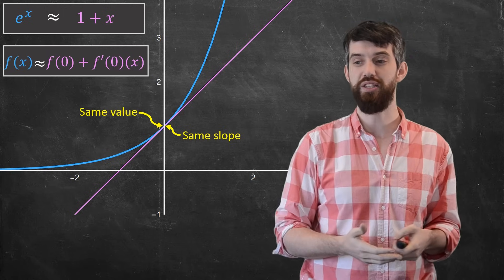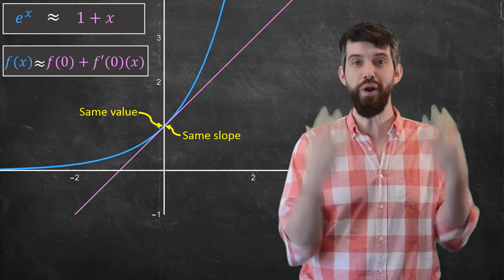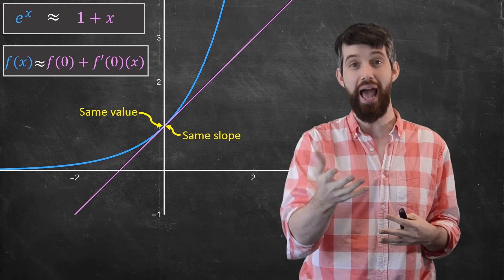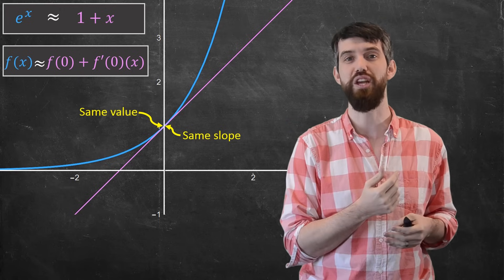Slightly more generally, the linear approximation is going to be that f of x is approximately f of zero plus the derivative at zero all times x. It's the same idea what we just walked through.